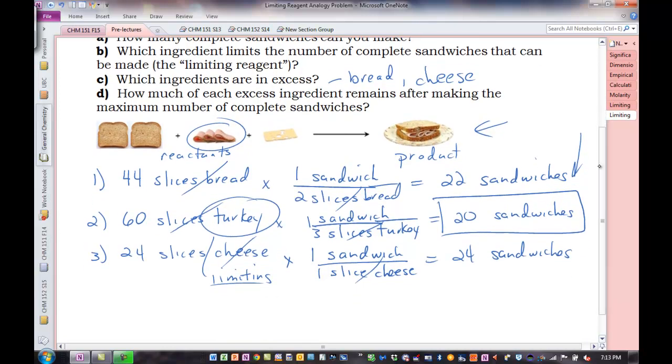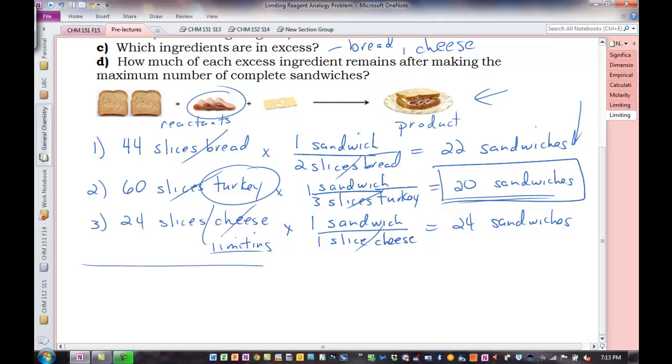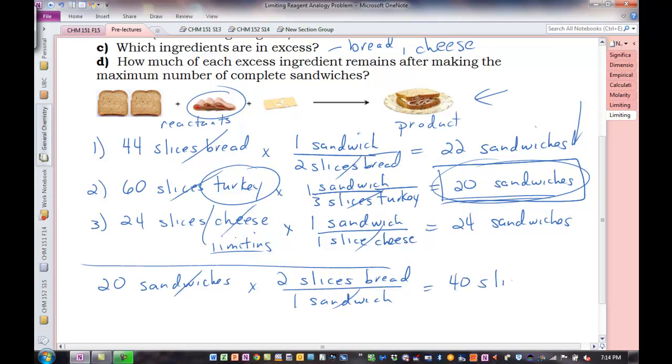Last part of the problem: How much of each excess ingredient remains after we've made the maximum amount of sandwiches? After we've made these 20 sandwiches, how much bread is left over? How much cheese is left over? So what we're going to do in this case is work backwards from the correct amount of sandwiches. Probably the easiest way to solve these. We've solved excess reactant differently in other problems. In this case, we know we made 20 sandwiches, and we know we need two slices of bread for each sandwich. And we need 40 slices of bread.